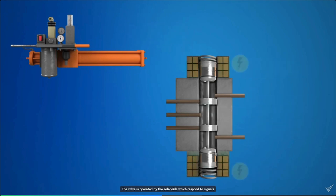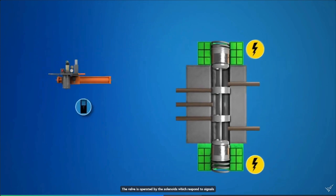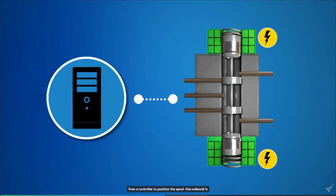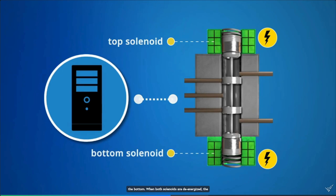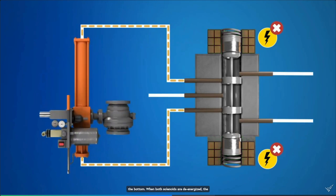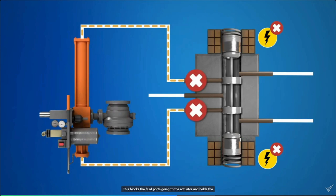The valve is operated by the solenoids, which respond to signals from a controller to position the spool. One solenoid is attached to the top of the spool and the other is attached to the bottom. When both solenoids are de-energized, the springs hold the spool in a neutral, or centered, position. This blocks the fluid ports going to the actuator and holds the actuator's piston in place.